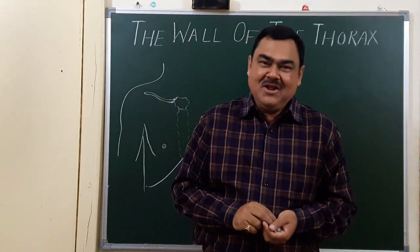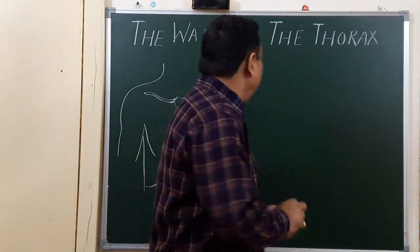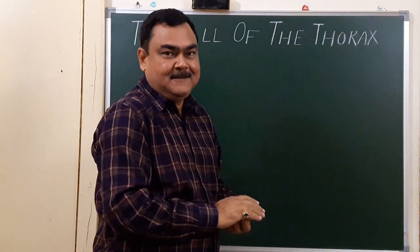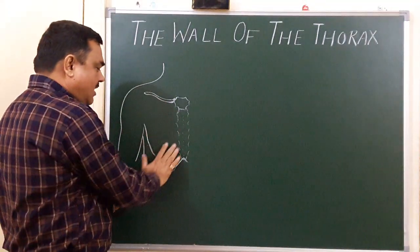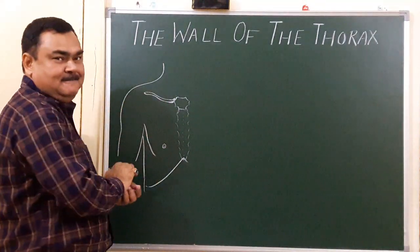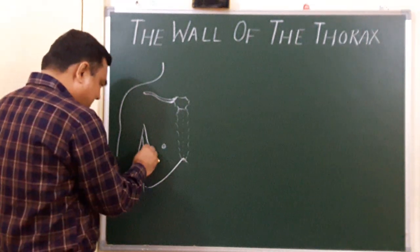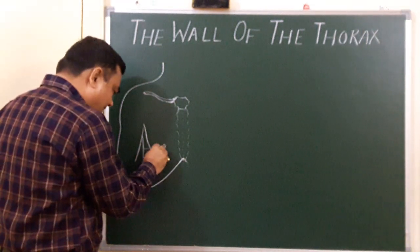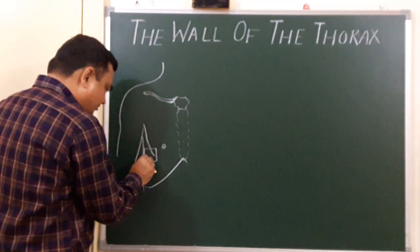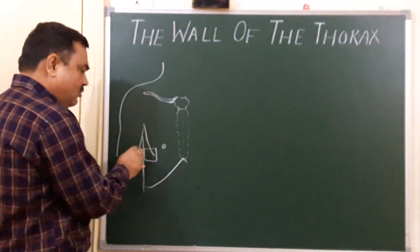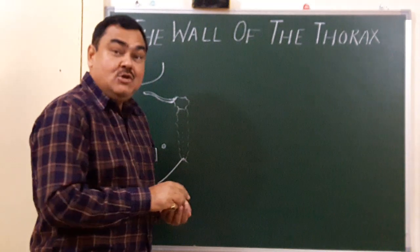We will discuss the wall of the thorax. Here you can see this is the wall of the thorax. If you cut a section at this level, a small piece of this thoracic wall is removed from here, then you will see the internal structures.